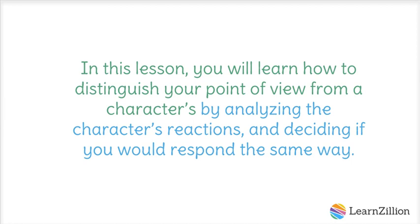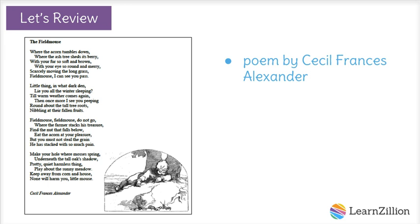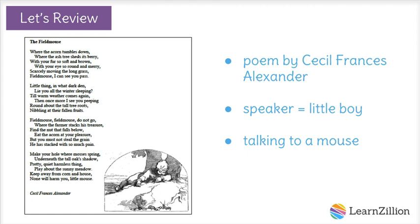Let's review. We've been reading the poem The Field Mouse, written by Cecil Francis Alexander. We know that in this poem, the speaker is a little boy, and he's talking directly to a mouse. The speaker also mentions a farmer, although he doesn't speak directly to him like he does the mouse.